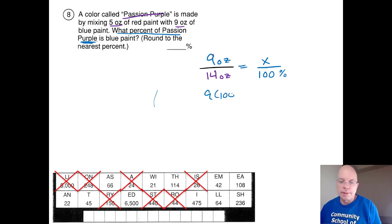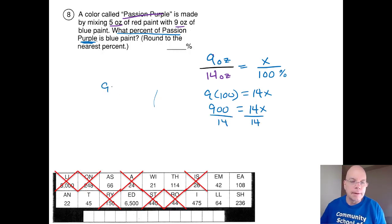Nine times 100 equals 14x. Divide both sides by 14. 900 divided by 14, there are zero fourteenths and nine.